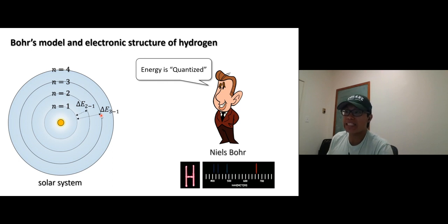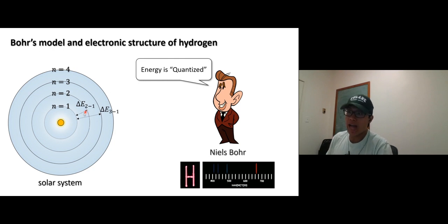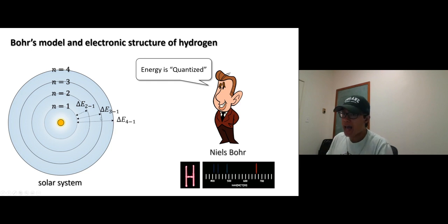For an electron to jump from level one to level three, it needs exactly the energy difference between levels three and one — say 15 kilojoules per mole. If you add 14 it won't go, 13 won't go, even 14.9 won't work. Add 10 and it goes to level two; add 15 and it goes to level three; add 20 kilojoules per mole and it jumps to level four. 19, 18, 18.5 — none of those work.